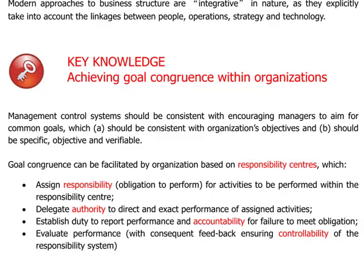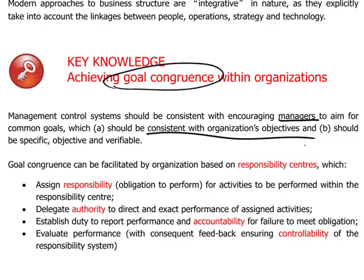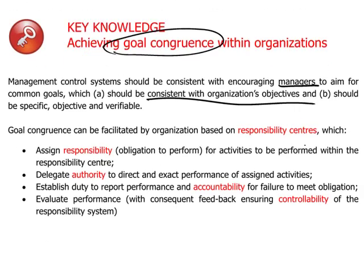The final key idea is that within any properly operating organization, there has to be goal congruence. We want to make sure that managers at their various levels and individuals working within departments throughout the organization are all operating with goals and making efforts that are consistent with the organization's overall objectives. To achieve this, we have to assign responsibilities, give people authority to act within their areas of responsibility, and make them accountable to a higher level — effectively creating a hierarchy.